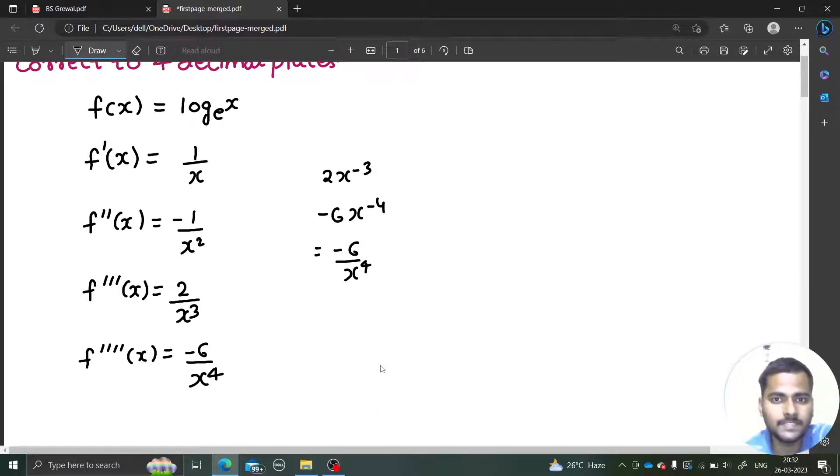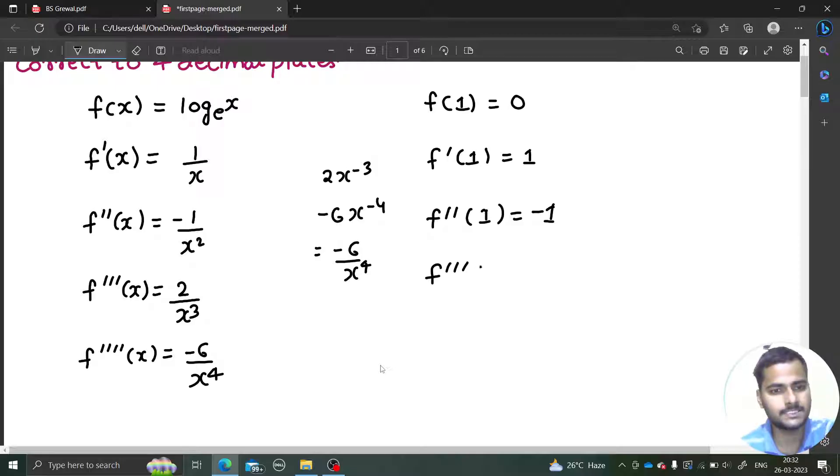If you need fourth derivative that also you can calculate. Fourth derivative will be 2 x power minus 3, so that will be minus 6 by x power 4. Now we need to find all of these values at 1. f of 1 is log 1 which is simply 0, f dash 1 is 1, f double dash 1 will be minus 1, f triple dash 1 will be 2, and the fourth derivative value at 1 will be minus 6.